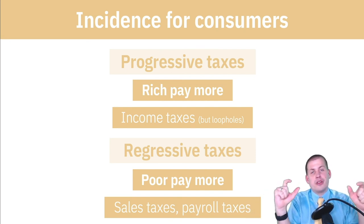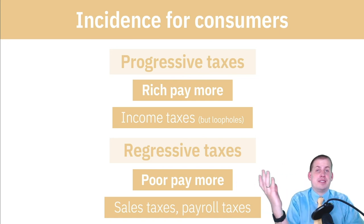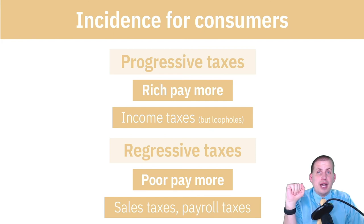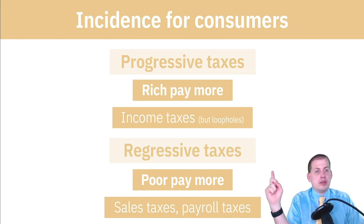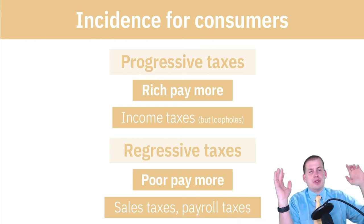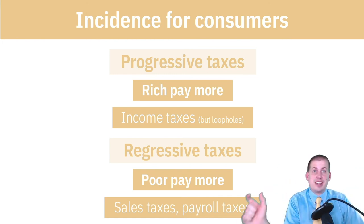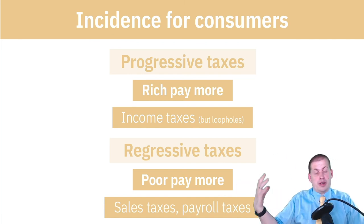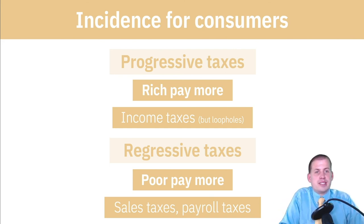Flat taxes are a popular policy proposal to simplify the tax system — everyone pays, say, 15%. While easy to administer, flat taxes are on the regressive side: for Bill Gates, 15% of his income is a tiny sliver of his total assets, while for someone earning just ten thousand dollars a year, 15% is a massive chunk of their income. So the burden of the flat tax falls more on the poor than on the rich.